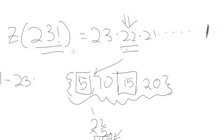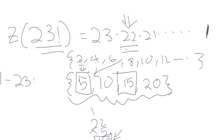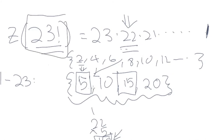So when you expand 23 factorial, every multiple of 5 will end up paired with an even number, producing a factor of 10. That's why the answer is simply the count of multiples of 5 between 1 and n. That's essentially our answer for the number of trailing zeros.